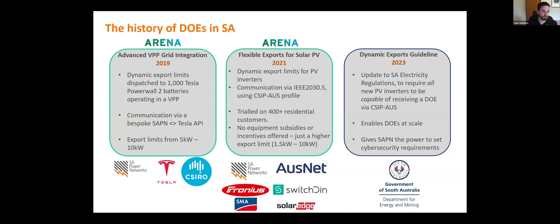The history of DOEs in SA: we started this journey back in 2017, doing brainstorming in this area. In 2019 we launched an arena-funded project with Tesla and the CSIRO called Advanced VPP Grid Integration — working with Tesla to generate and communicate DOEs to a thousand Tesla Powerwall 2 batteries operating as part of a state government-funded VPP. Communication was via a bespoke SAPN-to-Tesla API, and export limits went from 5 kW to 10 kW, effectively doubling their export limit. This was our first real demonstration of a DOE.